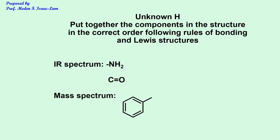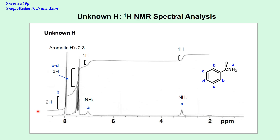Now we have a picture of the structure of unknown H. For the proton NMR spectrum, you typically don't have a y-scale but you have an x-axis going from 0 to about 10 or 12 ppm. The left side is called the deshielded or downfield region; the right side is the shielded or upfield region.